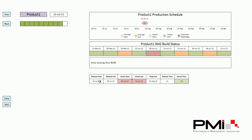Down the bottom we've got the planned start, end, actual start, end, required end, the planned time, and the actual time. With this particular product it was completed in 19 days. The actual start and actual end are highlighted red because we were a few days late — we should have started on the 1st but actually started on the 5th. We should have ended on the 30th but ended on the 31st, even though we've got green for actual time because it was produced quicker than planned.